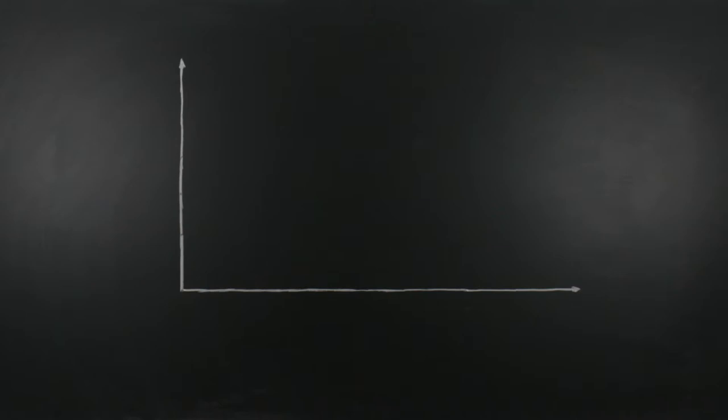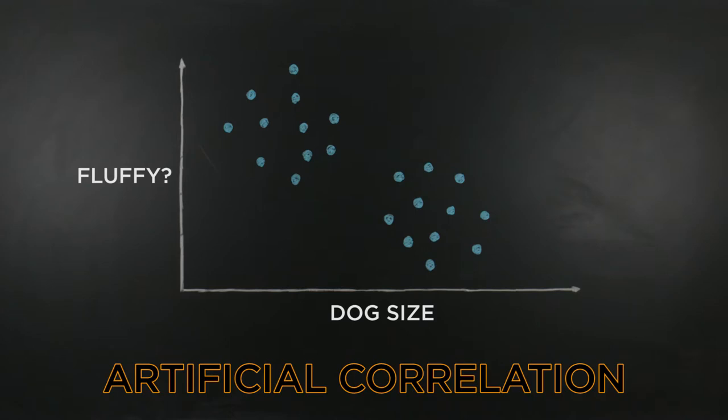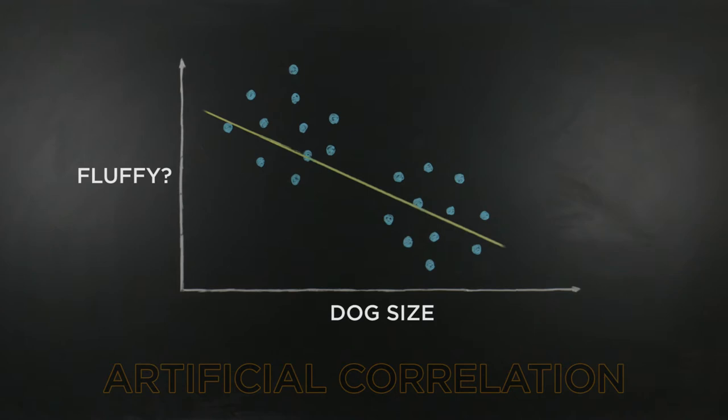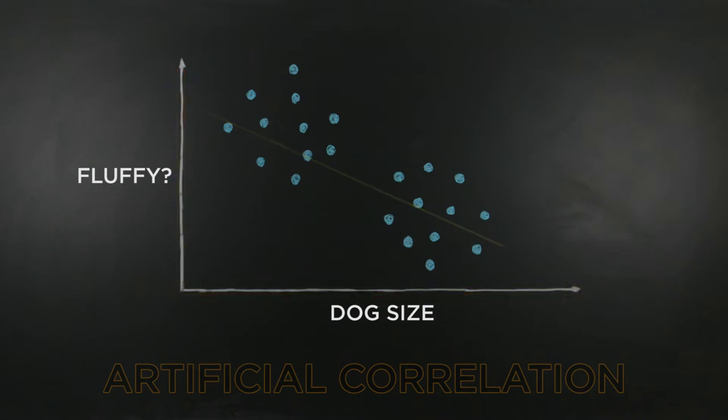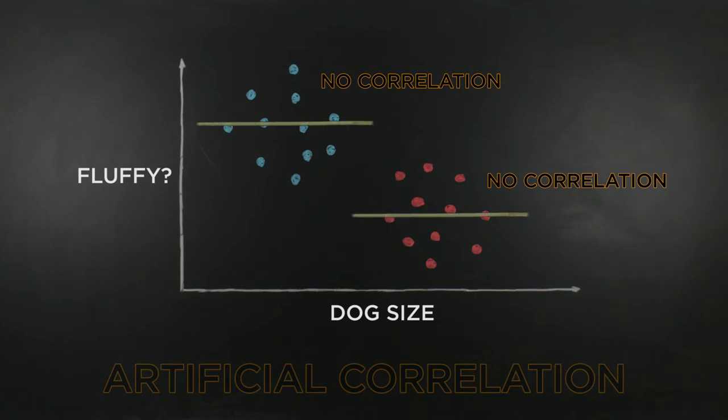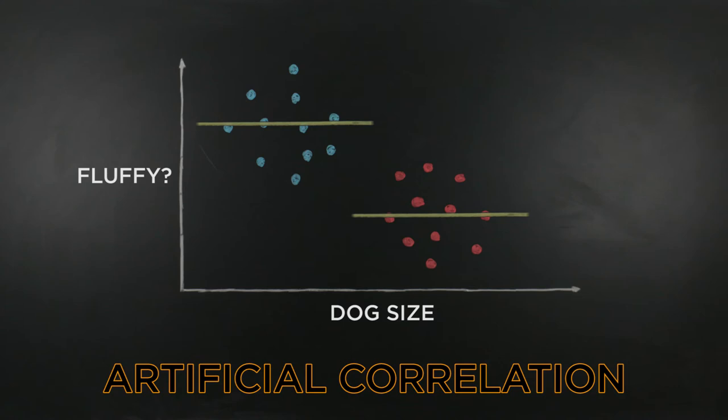But be careful. Sometimes a graph can look like a correlation when it is not. This is called an artificial correlation. For example, this graph seems to show a negative correlation between a dog's size and their fluffiness. We might predict that the larger the dog, the less fluffy they are. But it turns out that there are actually two different subgroups in this graph: puppies and adults. Within these two subgroups, there is no correlation between our x and y variables. So this graph only shows an artificial correlation.